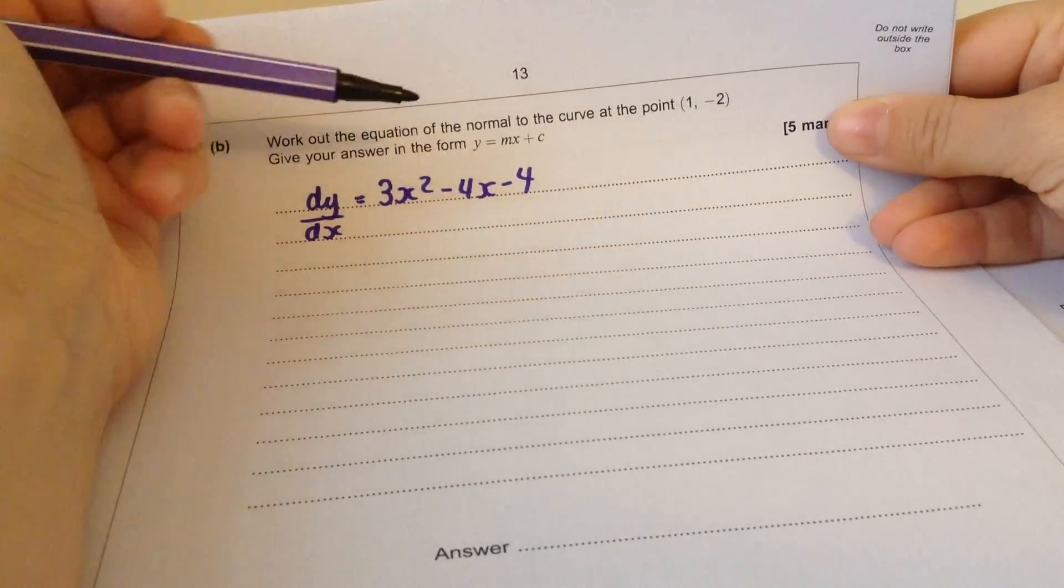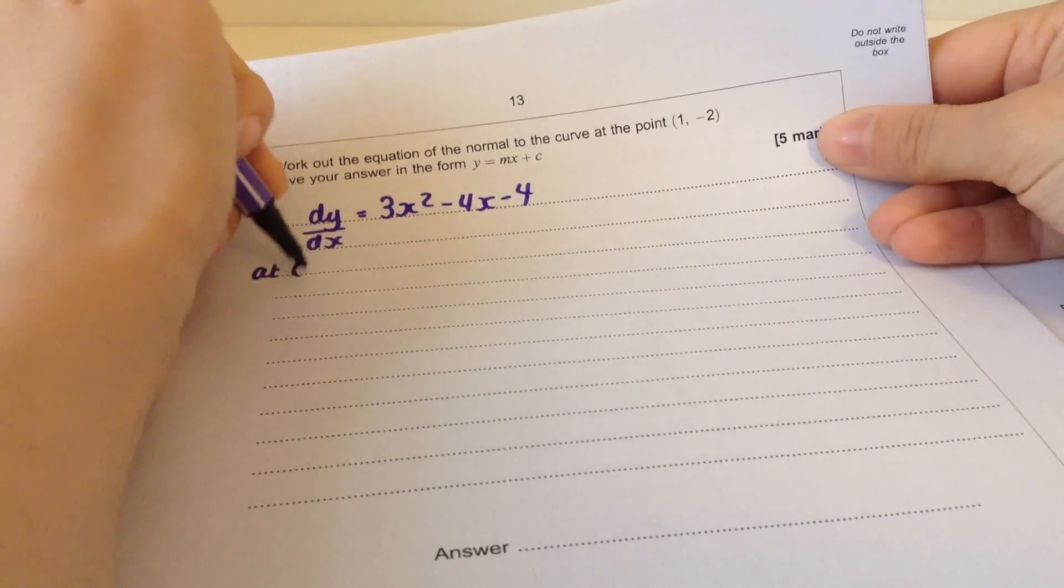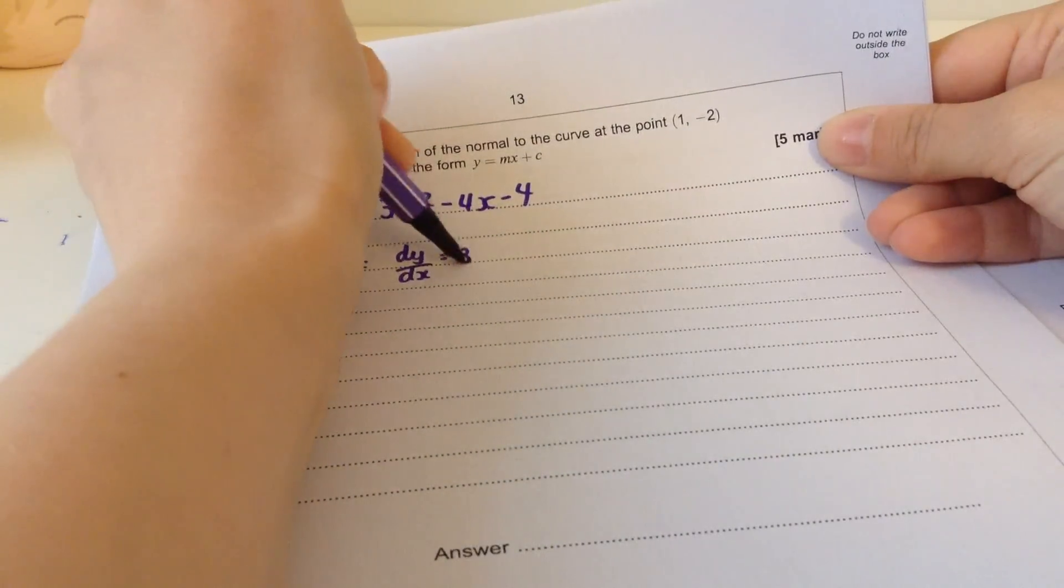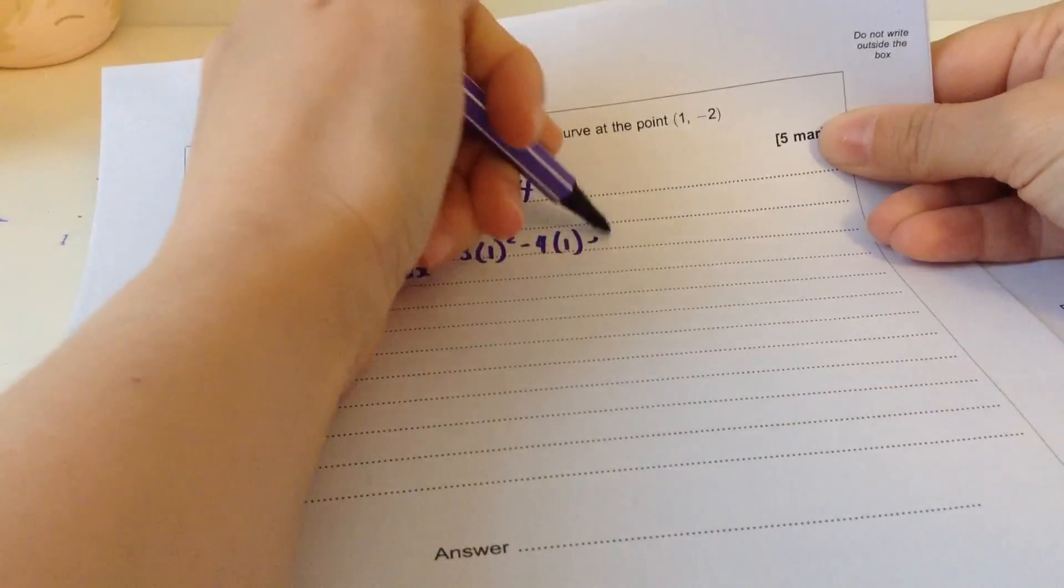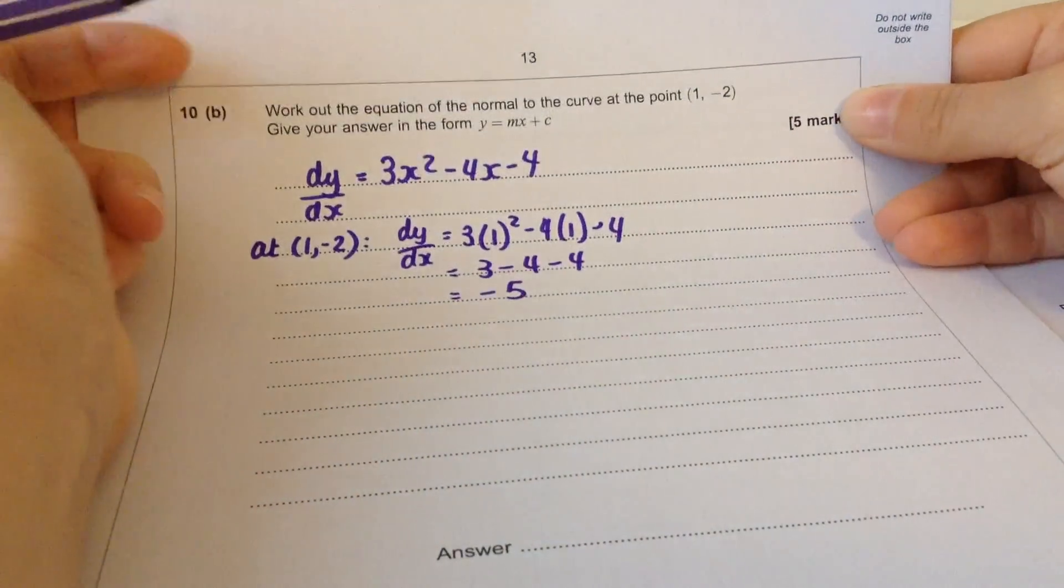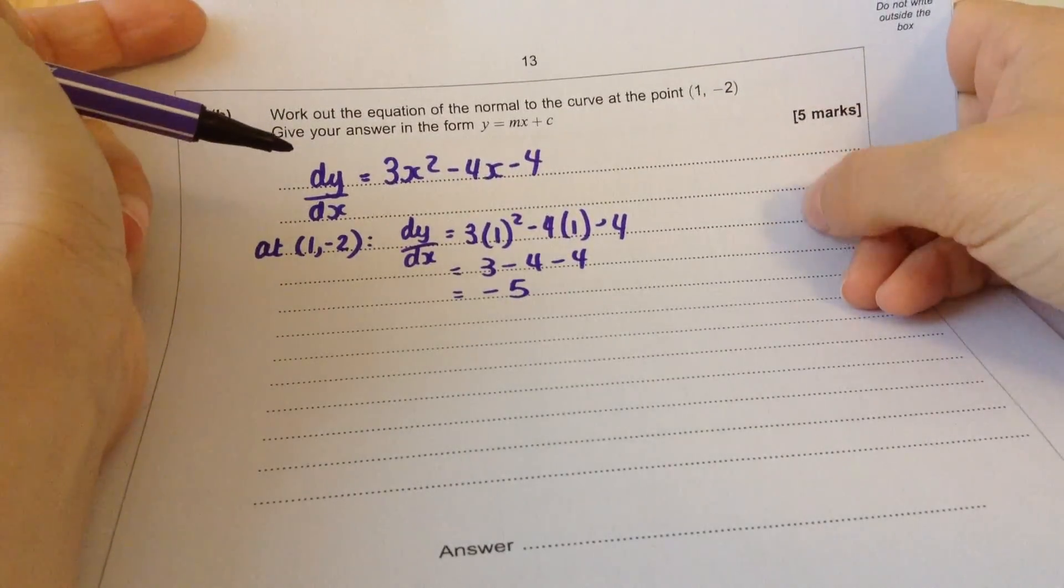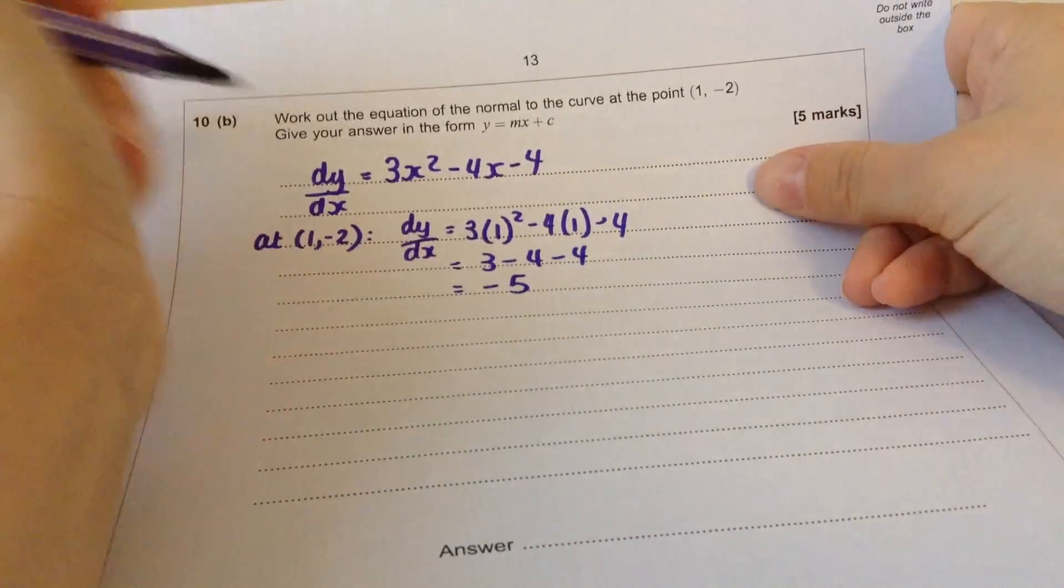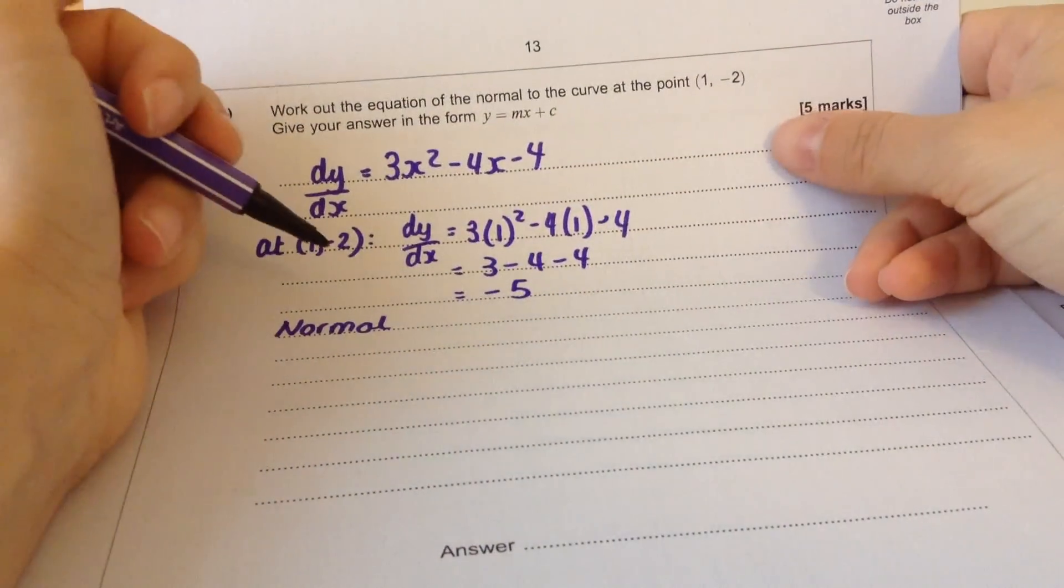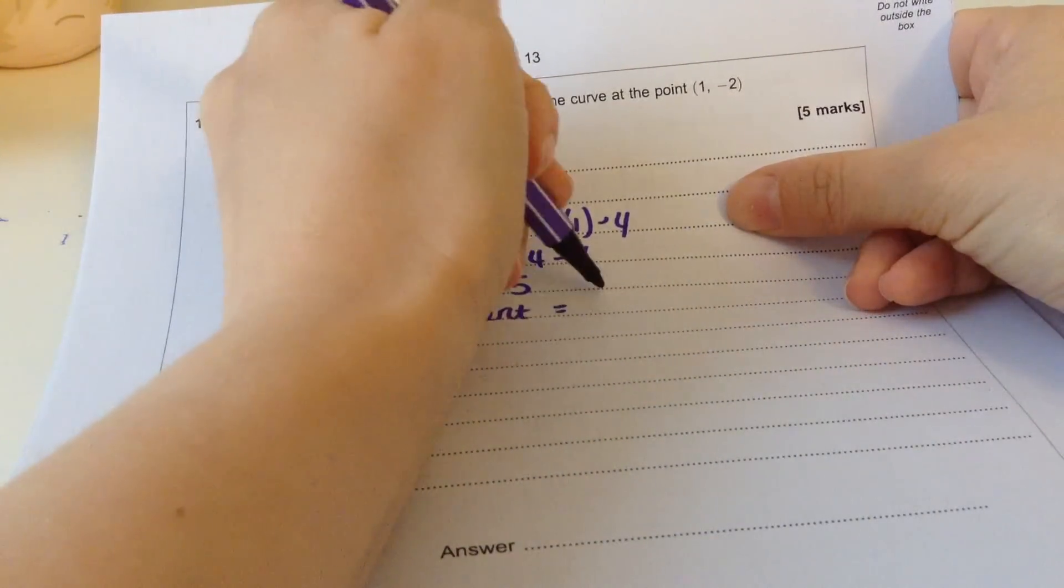We can find the gradient of the curve at this point by putting the x value into that. dy by dx will equal 3 times 1 squared minus 4 times 1 minus 4, which is 3 take away 4 take away 4, which is minus 5. The gradient of the tangent to the curve is minus 5, but we want the normal, not the tangent. Normal is another word for perpendicular. The normal gradient will be the negative reciprocal of minus 5, which will be 1 fifth.